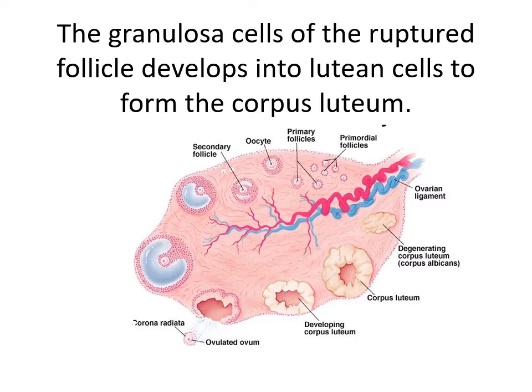After ovulation, the granulosa cells remaining in the wall of the ruptured follicle, together with cells from the theca interna, become vascularized by surrounding vessels. Under the influence of the luteinizing hormone, these cells will develop a yellowish pigment and change into lutein cells, which will later form the corpus luteum. The corpus luteum will then secrete estrogen and progesterone.